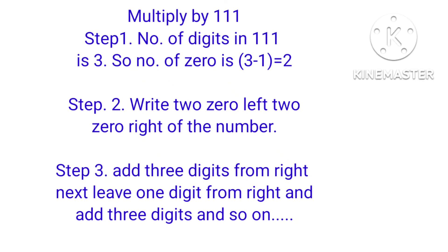For multiplying by 111: Step 1 — the number of digits in 111 is 3, so number of zeros is 3 minus 1 equals 2. Step 2 — write two zeros left and two zeros right of the number. Step 3 — add three digits from the right, then leave one digit from the right and add the next three digits, and so on. Similarly we can multiply by 1111 and the series of 1s. Thank you.